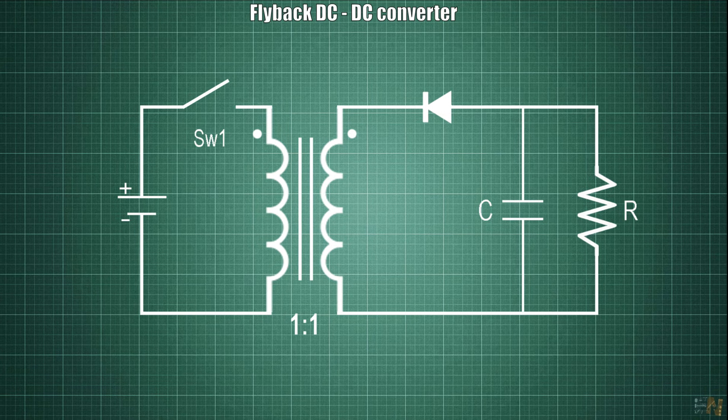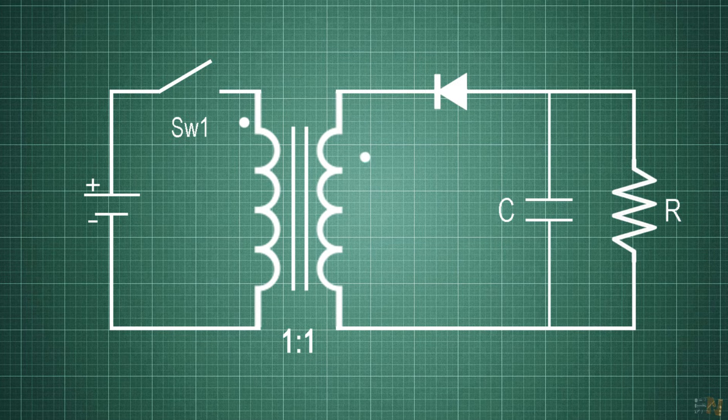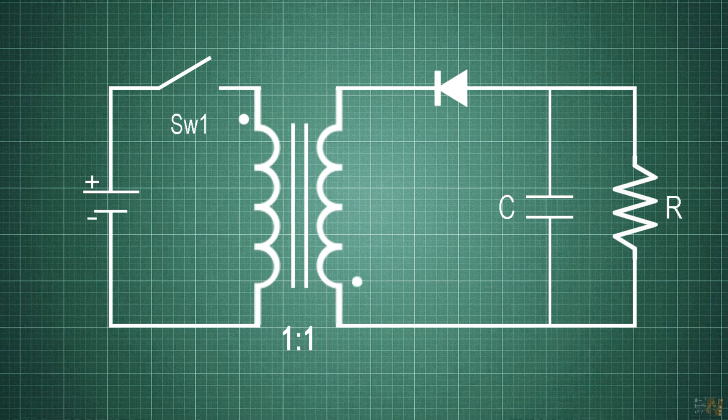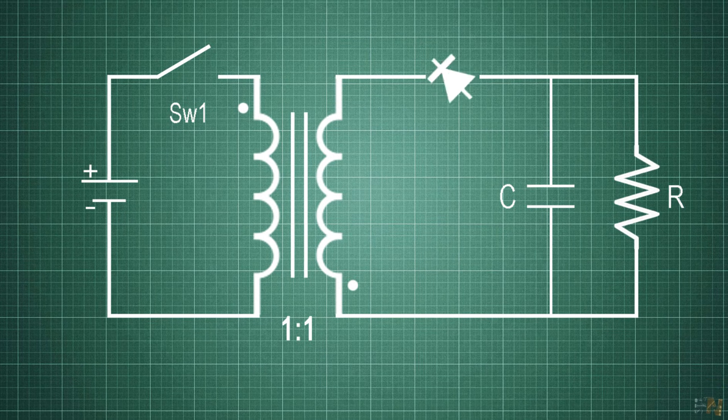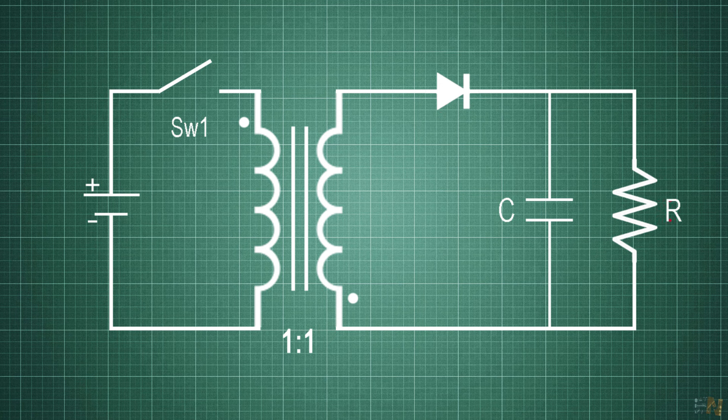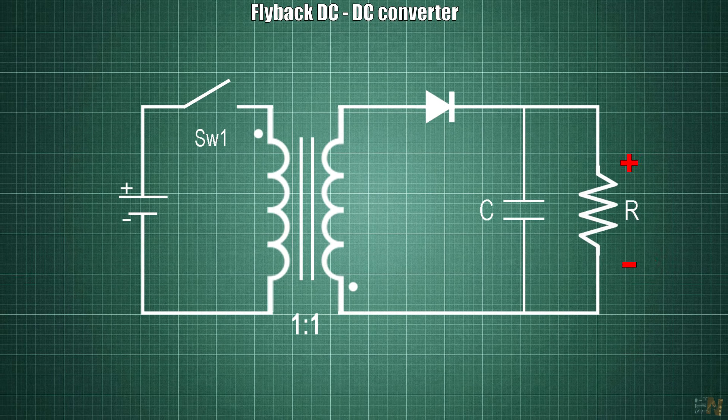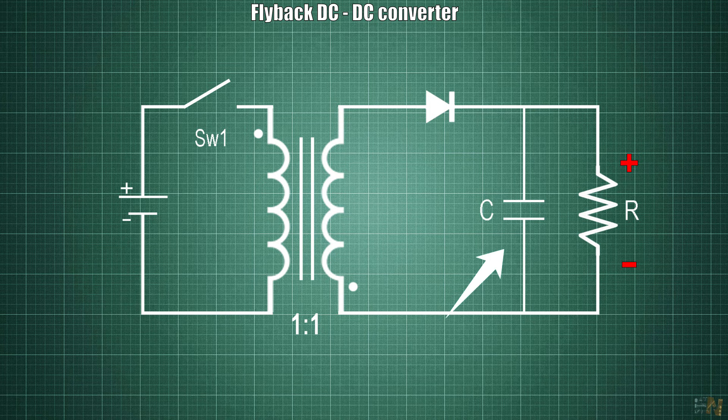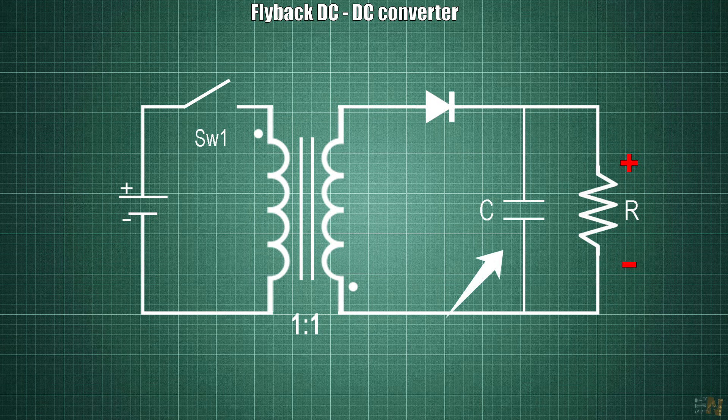To get a positive voltage, what we have to do is invert the secondary coil so now the dot will be placed at the bottom here and also invert the diode. So now we have a voltage at the output of this polarity. If we also add a capacitor, we could smooth the output and store the voltage. Basically, that's how the flyback converter works.